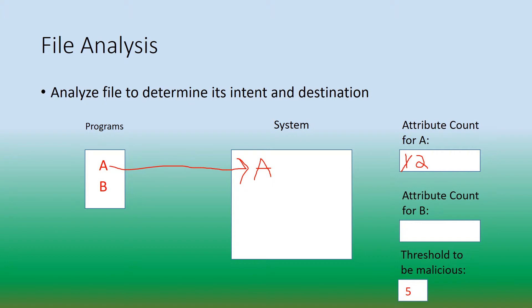Now let's look at program B. It enters the system. The system will analyze program B, and from its initial analysis of its code, program B is non-malicious and not harmful. So we note that program B has zero attributes so far.